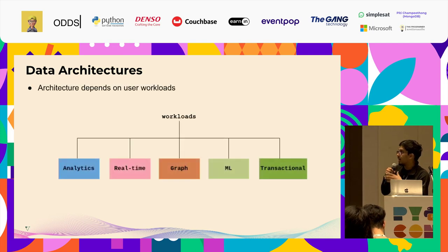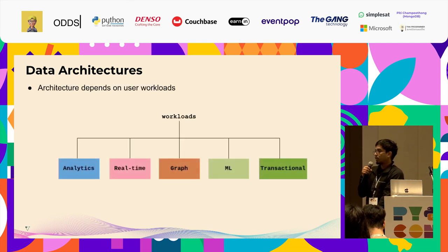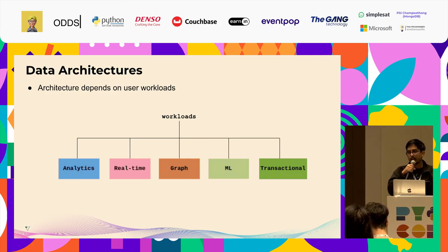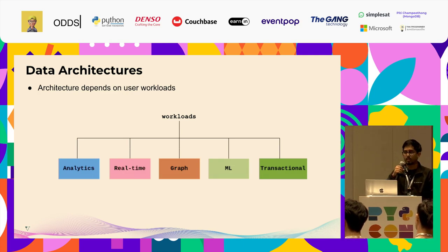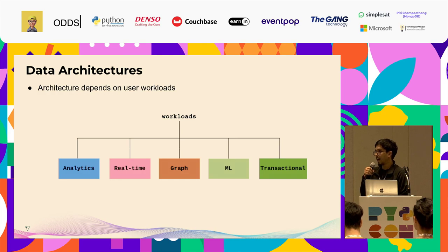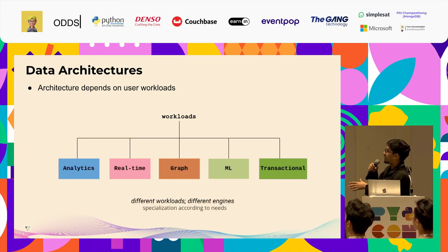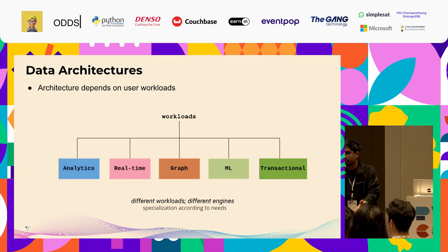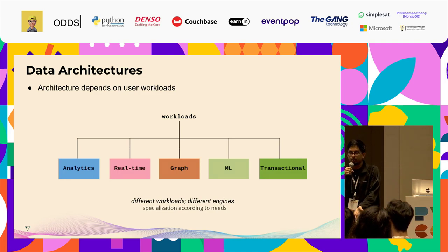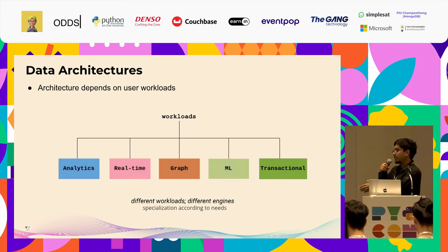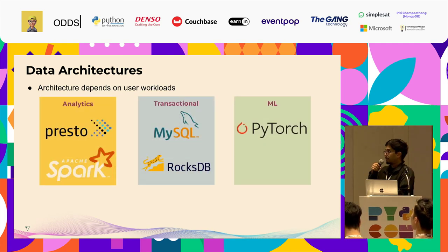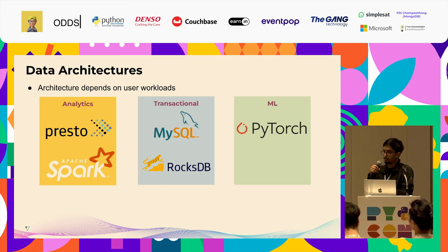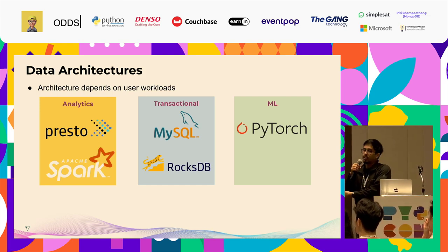Right now we have different kinds of data workloads in the market: analytical data, transactional data, real-time data, machine learning, graph — it's just too much. Because of this, we need different architectures for different workloads due to their specific needs. Obviously, you can't use a SQL engine for running PyTorch queries. For analytics we have Presto or Apache Spark, for transactional we have MySQL or RocksDB, and for machine learning we have PyTorch.